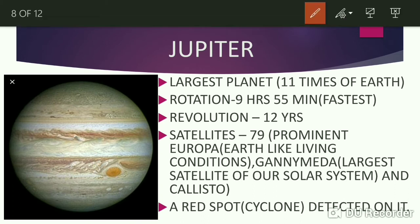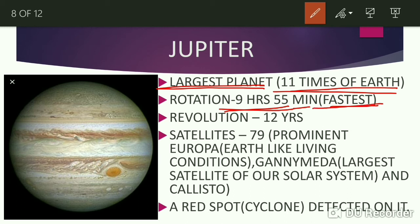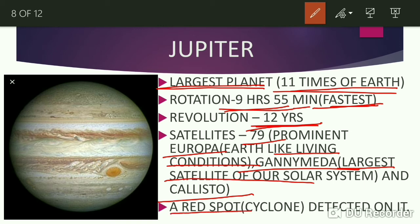Next planet is Jupiter. Jupiter is the largest planet of our solar system and it is about 11 times the size of our Earth. Rotation time taken by Jupiter is 9 hours 55 minutes, and it is considered as the fastest rotation by any planet in our solar system. Revolution time taken by Jupiter is 12 years. Total number of satellites of Jupiter are 79. Prominent satellites are Europa, Ganymede, and Callisto. Europa has Earth-like living conditions, and Ganymede is the largest satellite of our solar system. A red-spot cyclone has been detected on Jupiter.